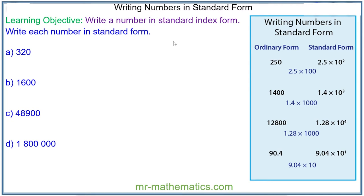We'll begin by writing 320 in standard form. Now standard form means you have a number between 1 and less than 10 multiplied by a power of 10. So 320 can be written as 3.2 multiplied by 100. We've chosen 100 because that is a power of 10, which is 10 squared. So we have 3.2 multiplied by 10 squared.